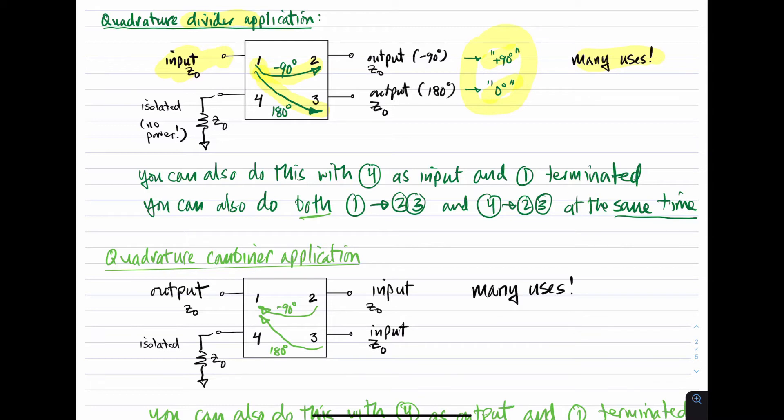Now before moving on, let me just point out two more things. You can also do all of this with port four as the input and port one terminated. We saw this in the S parameters. So there is no problem with switching these two ports so that you have the input going into port four and the isolated port being port one. And the resistor that you hang off the isolated port would receive no power. It would be there purely for matching because, remember, all these ports have to have matched terminations. And everything would work the same way except four would be the input instead of one.